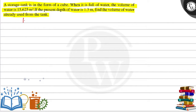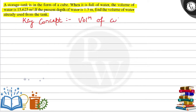So what is our key concept? The first key concept is volume of cube, which is A cube. And the second key concept is volume of a cuboid, that is equal to length into breadth into height.